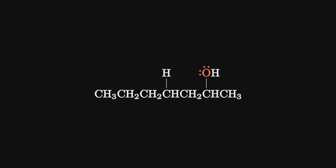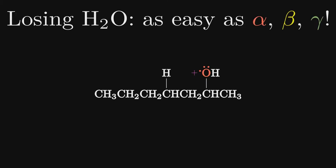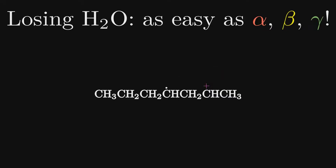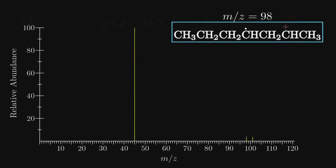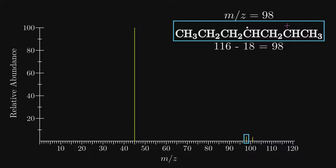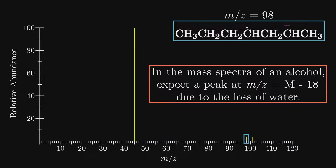If what you have seen so far has you begging for something easier, you're in luck. When an alcohol fragments after ionizing, one thing it does produce is a water molecule. It's kind of strange where the extra hydrogen comes from — it does not come from the alpha carbon which bonds directly to the alcohol group, nor from the beta carbon which is next door; instead it comes from the gamma carbon. After this fragmentation, the water molecule has no charge so it is not detected. Meanwhile, this fragment has a mass of 98 and it is detected. Heptan-2-ol has a mass of 116, and if we subtract the mass of water, we get 98. This can be used in the general sense that for any alcohol, there should be a peak at M-18 due to the loss of water.